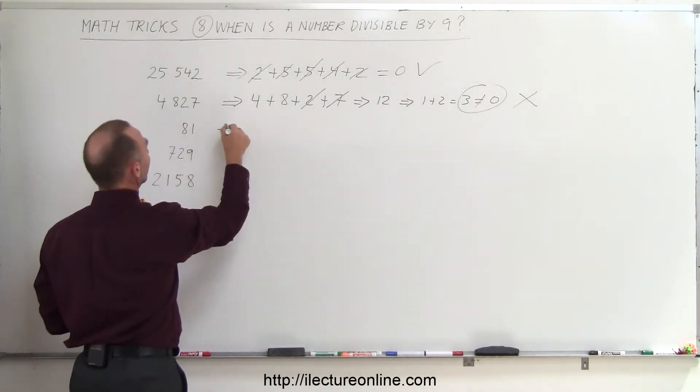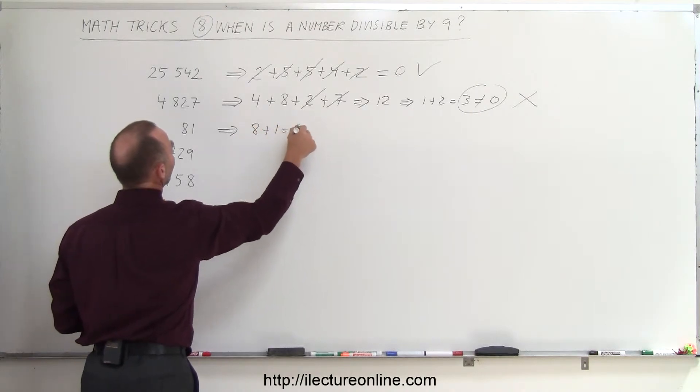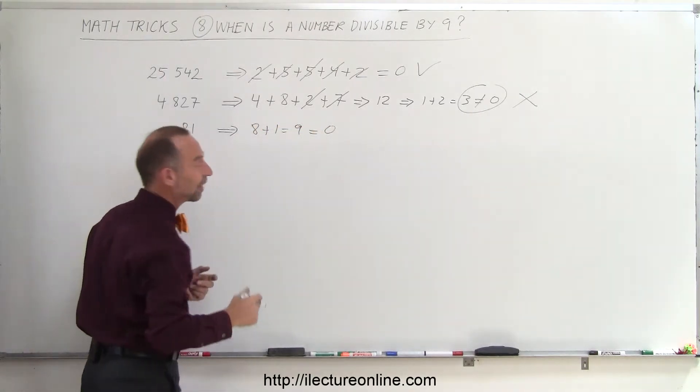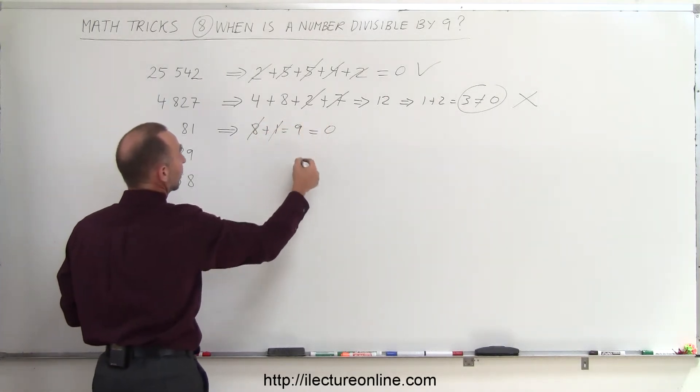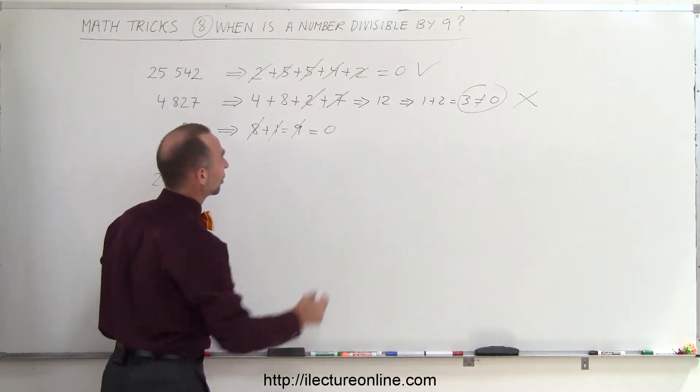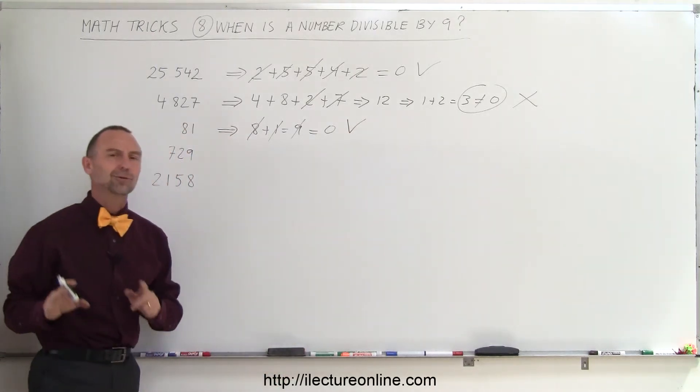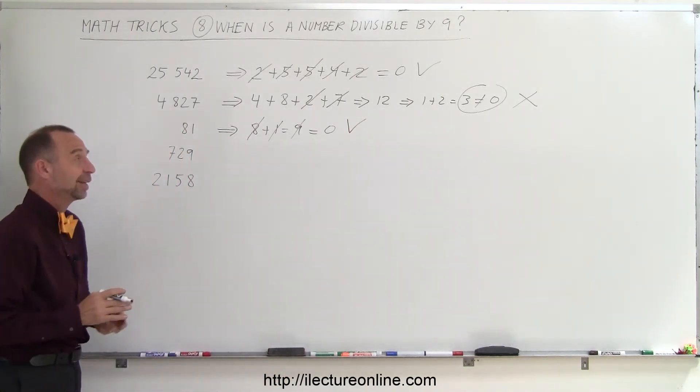Here, take this number. We have 8 plus 1 equals 9, which equals 0, because any time you have a 9, it goes to 0. In other words, we could have simply canceled it out. So 81 is divisible by 9. Of course, we knew that already because 9 times 9 is 81.